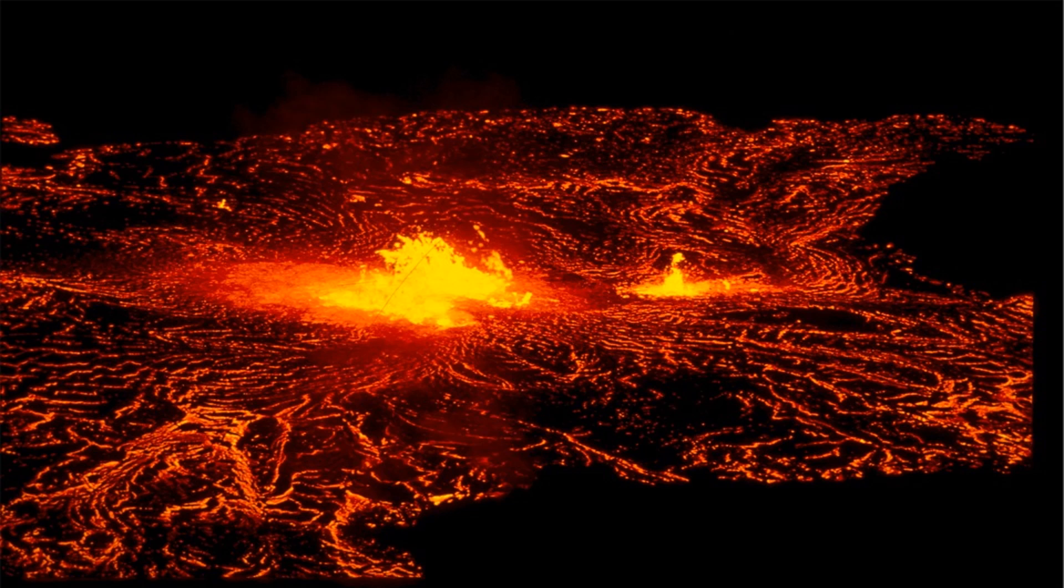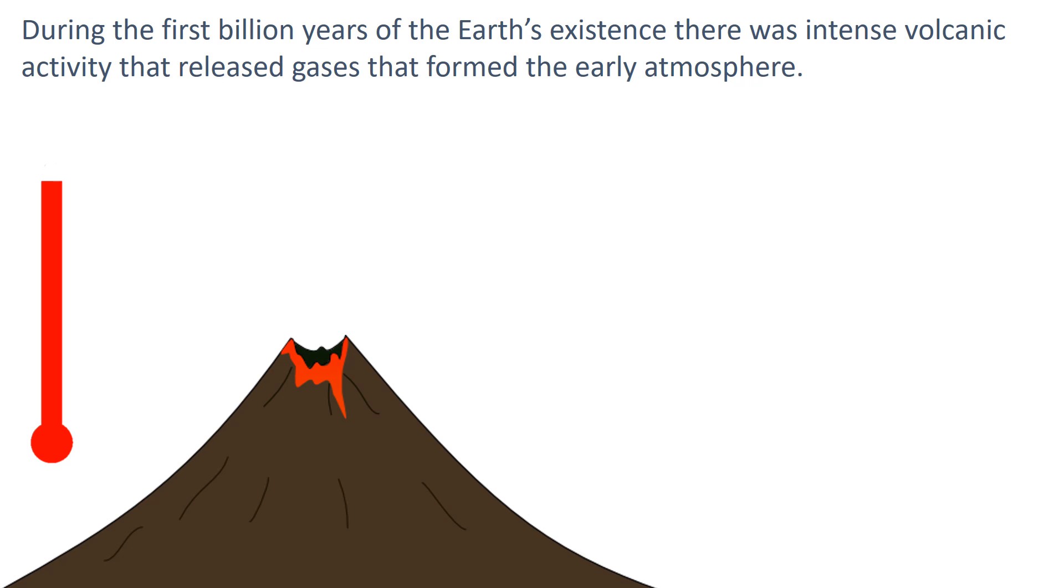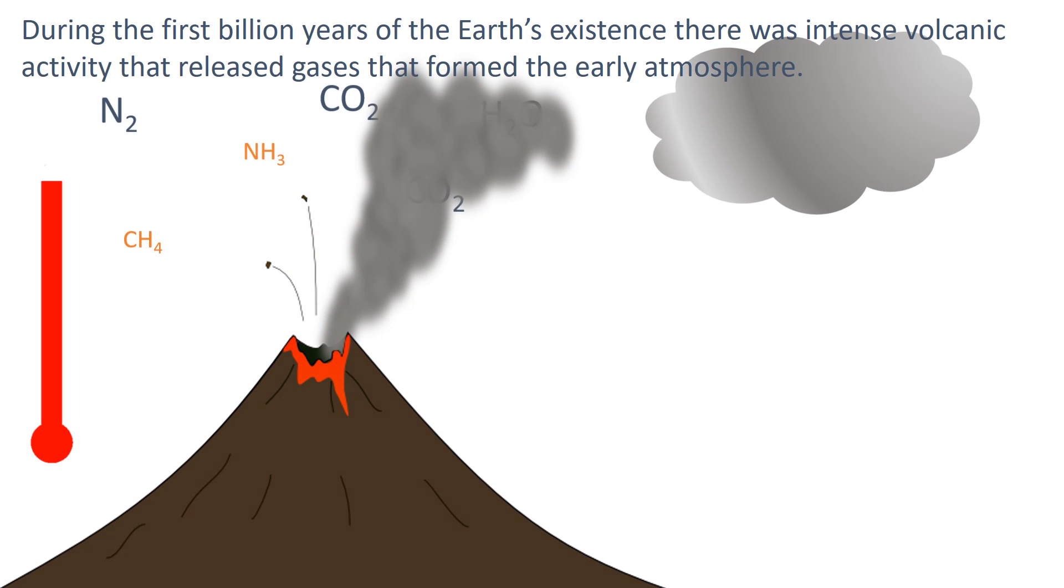The atmosphere that was formed would have been very similar to that of Mars and Venus today, with volcanoes producing large amounts of carbon dioxide with little or no oxygen gas.